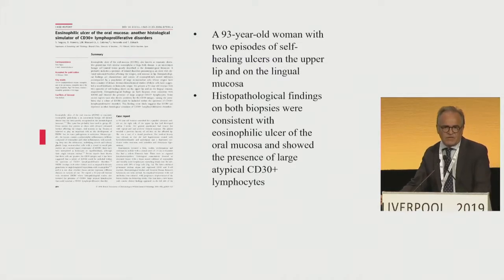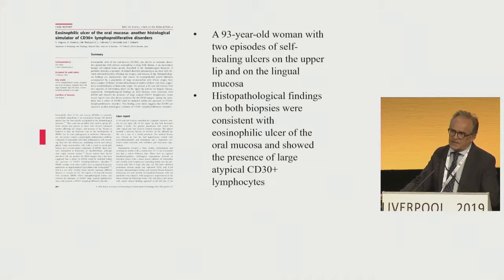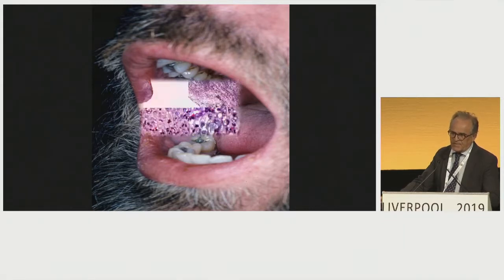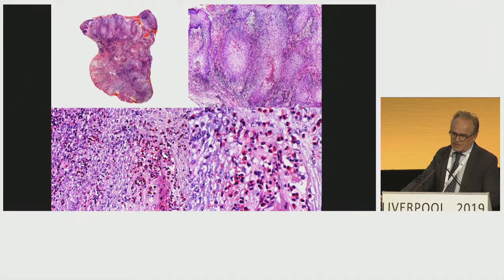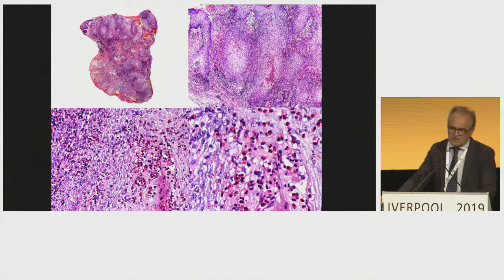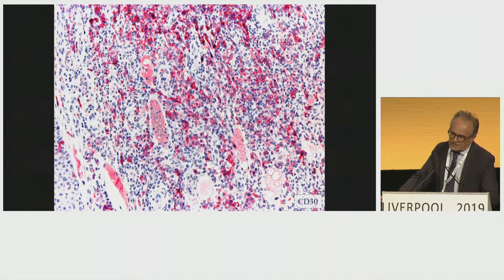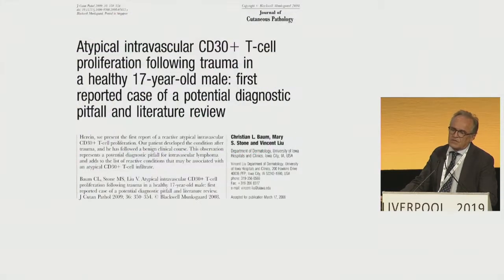Eosinophilic ulcer of the tongue is also frequent in my experience. Sometimes we see an ulcerated lesion present for a long time where the clinical diagnosis is squamous cell carcinoma, but the biopsy shows a typical eosinophilic infiltrate. This case is in the oral mucosa — the most frequent location is on the tongue. The punch biopsy shows hyperplastic epidermis and a dense inflammatory infiltrate with many atypical lymphocytes, but the presence of many eosinophils is a good clue. When you stain for CD30, many of these lymphocytes are positive. This is another mimicker of lymphoma or lymphomatoid papulosis.